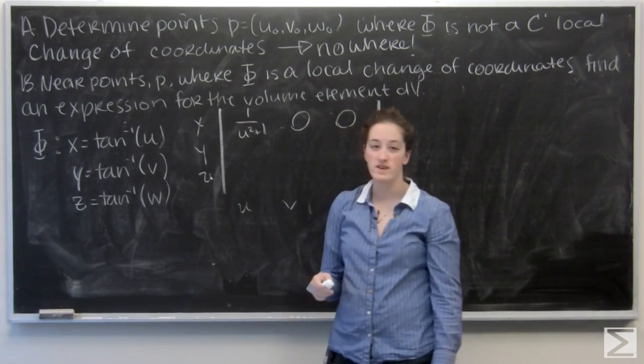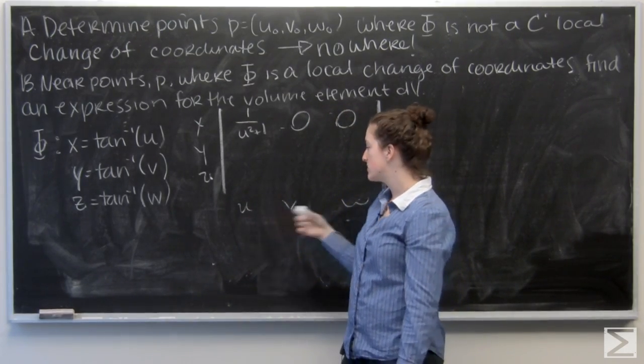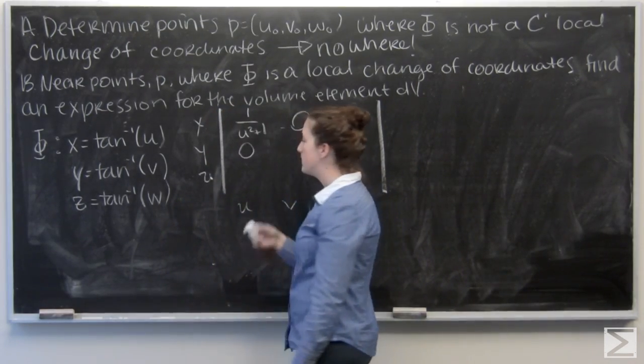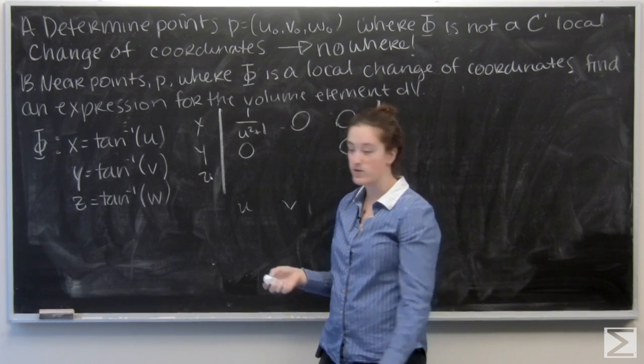And then for arctan v, we have the same thing. With respect to u and w, the derivative is going to be 0. And with respect to v, it's going to be 1 over v squared plus 1.